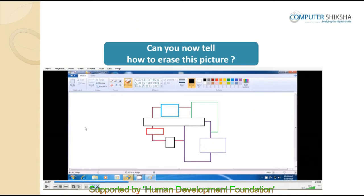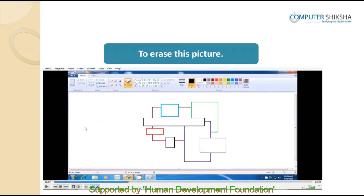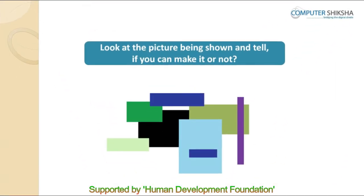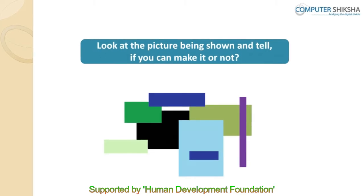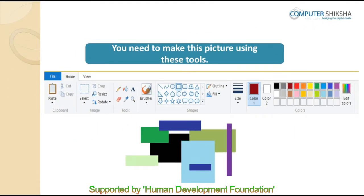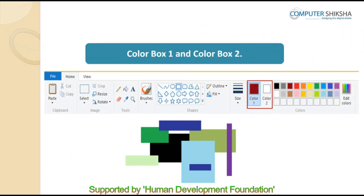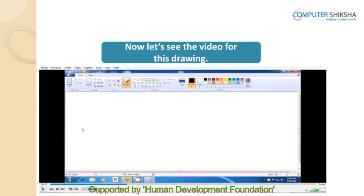Can you tell how you will erase this picture? Go ahead and erase it using the method we have already learned. Look at the picture being shown and tell if you can make it or not. You need to make the given picture using the fill option, color box 1, and color box 2. Color box 1 is used to make the outline, while color box 2 is used to fill in colors. Let us watch the video and learn how to make this picture.